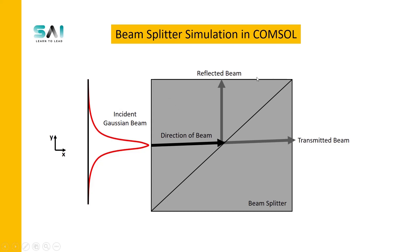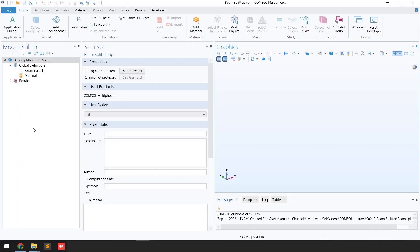Here is the problem statement. We are going to solve a 2D beam splitter. You can see here this is the first prism and this is the second prism, and these two prisms are combined with a 15 nanometer silver transition layer. We are going to apply an incident Gaussian beam from the left side and see how much of the beam is split into transmitted and reflected beams.